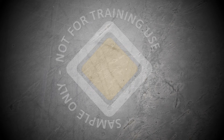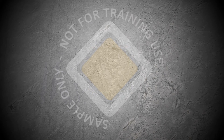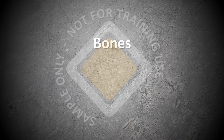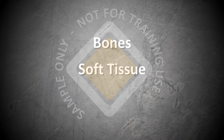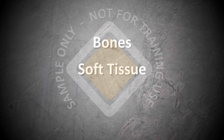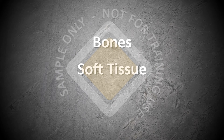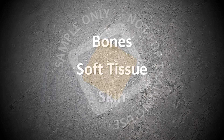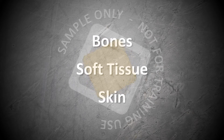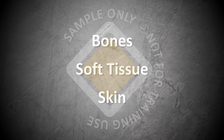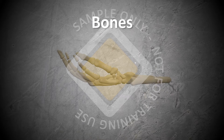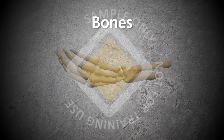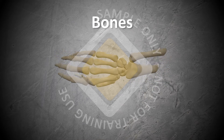There are three main components of the hand's anatomy – the bones, the soft tissue, which includes the muscles and nerves, and the skin. The bones provide the hand with support and strength.